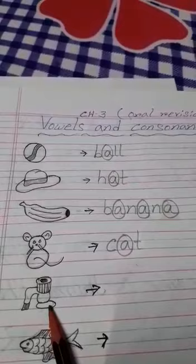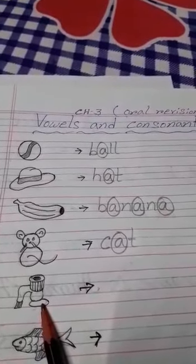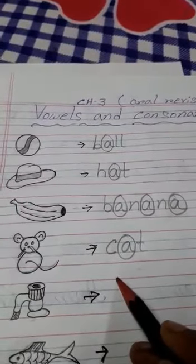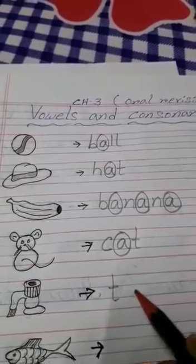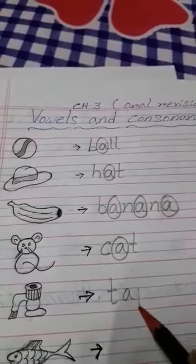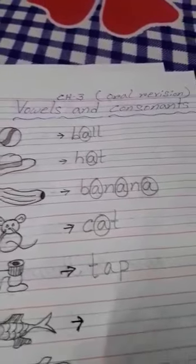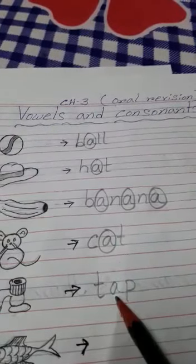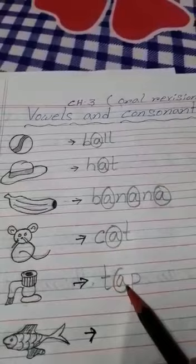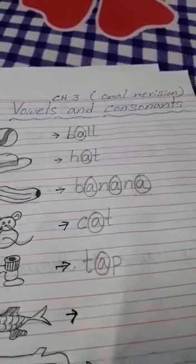Now, what picture is this? This is a tap. Spelling of tap. T-A-P, tap. Now, which one you have to circle? A you have to circle. Because here A is a vowel.